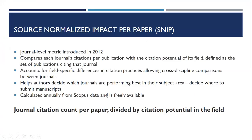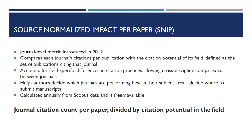Elsevier also offers the SNIP — Source Normalized Impact Per Paper — created in 2012. It contextualizes citations by measuring the impact of a paper within a subject field, weighting citations to try to correct discipline-specific differences in citation practices. It helps authors decide which journals are performing best in their subject field. It is calculated annually and is freely available on the Elsevier webpage.